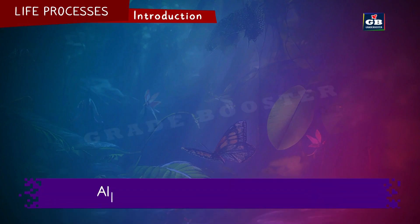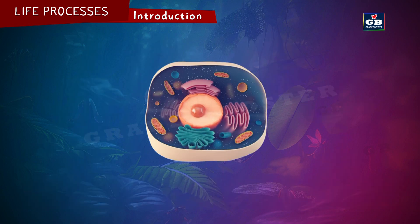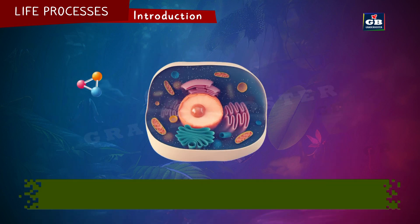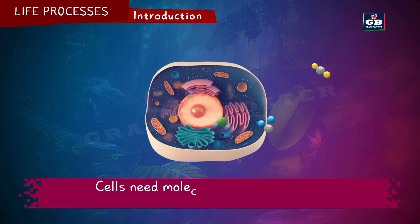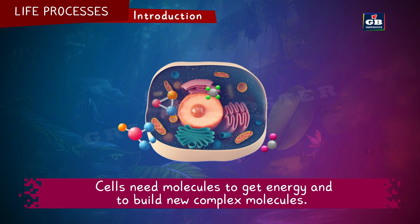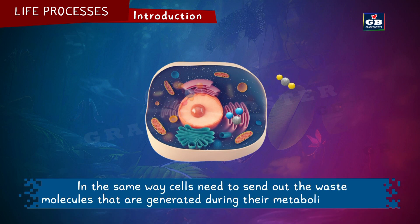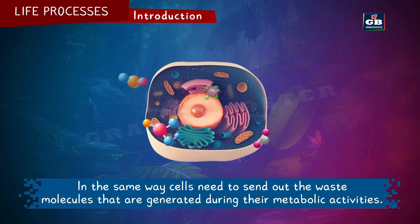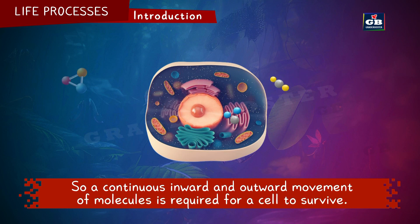Life processes. All living things are made up of cells. If we observe the cells of an organism, we can find that there is a continuous movement of molecules into the cell and out of the cell. Cells need molecules to get energy and to build new complex molecules. In the same way, cells need to send out the waste molecules generated during their metabolic activities. A continuous inward and outward movement of molecules is required for a cell to survive.